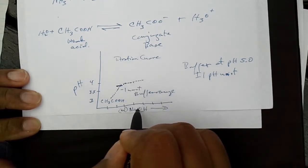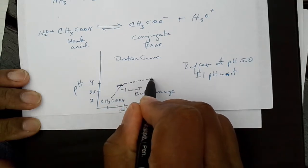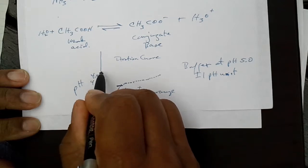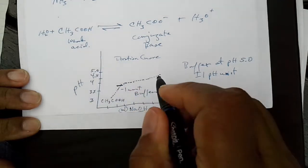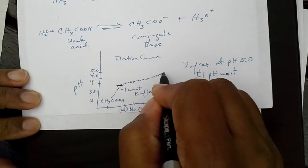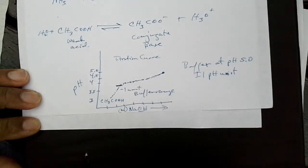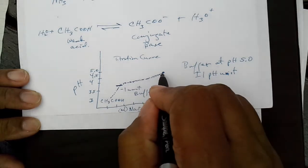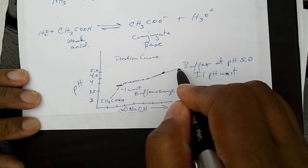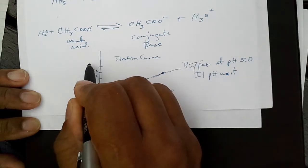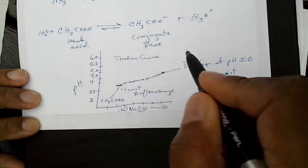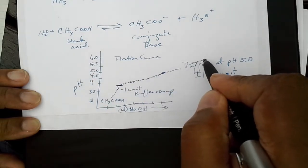As we continue to add the base, the pH doesn't change. 4.5, 5.0, we reach a center point. Okay? This midpoint is where we have our optimum buffer. All right, and as we continue to add base, the buffer goes up slightly. 5.5, 6.0 until it reaches, you'll see that, a point where pH starts to increase very rapidly as we increase the buffer.